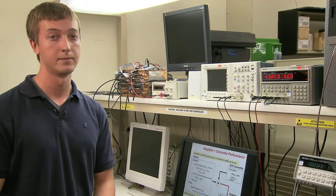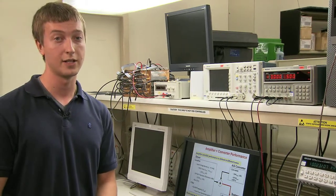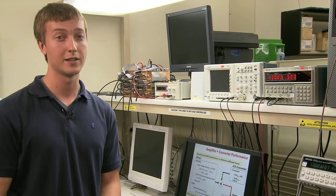So, typical rule of thumb, because you're using an SFDR linear sum, you'd want your amplifier to be about 15 dB better than your ADC, and you'd want your SNR to be about 10 dB better because it's an RMS sum.